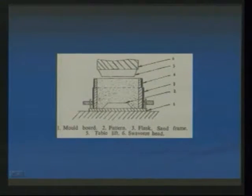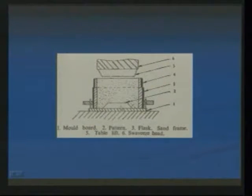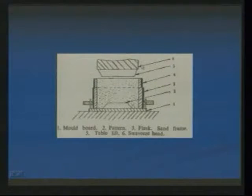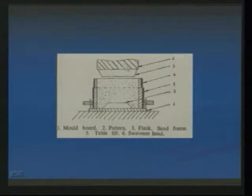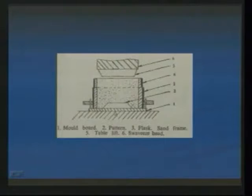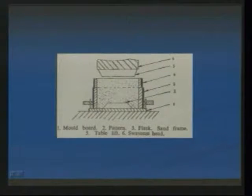In the case of the top squeezer, the figure shows the pattern, mold, mold board, flask, sand frame, table lift, and squeeze bed. Initially the pattern is placed and sand is poured over the pattern. The table lifts to some height and drops down towards the flask, and correspondingly the sand is packed around the surface of the pattern. This is one of the best methods for squeezing.